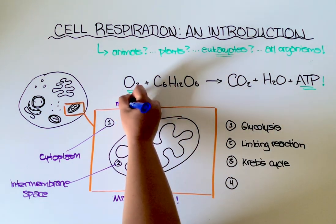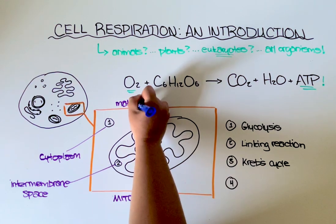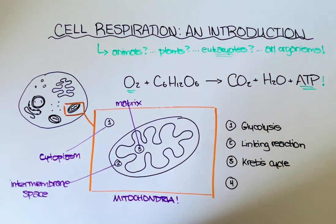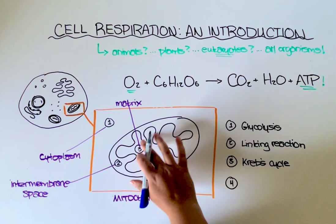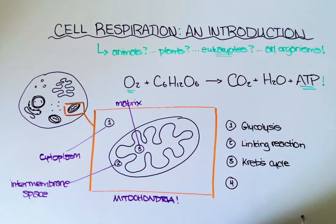we just need to know that the Krebs cycle occurs here in the matrix of the mitochondria. Yes, probably the coolest name ever in biology. The matrix is a fluid-filled space, very similar to the composition of the stroma in a chloroplast. Hopefully you're picking up, by the way, on some similarities between those two organelles.